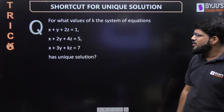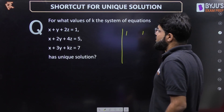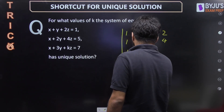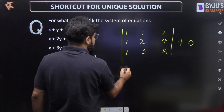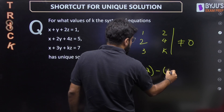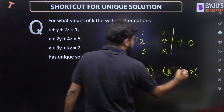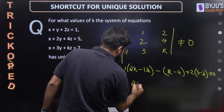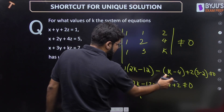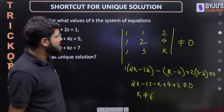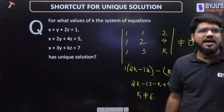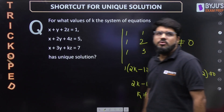Let's apply this quickly. For what values of k does the system of equations have a unique solution? Just one step — take the determinant of the coefficient matrix using only the coefficients of x, y, z. The matrix is [1,2,4; 1,3,k] and determinant ≠ 0. Solving: 2k − 12 − (k − 4) + 2(3 − 2) ≠ 0, giving k − 6 ≠ 0, so k ≠ 6. Any value of k not equal to 6 works.